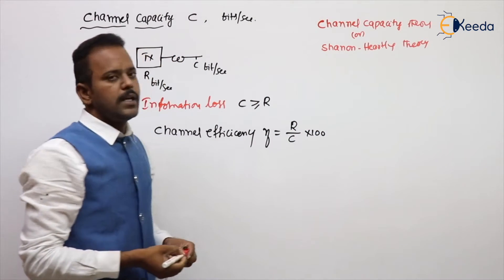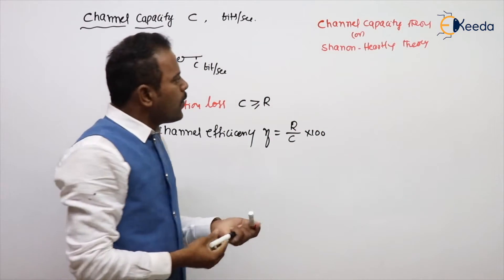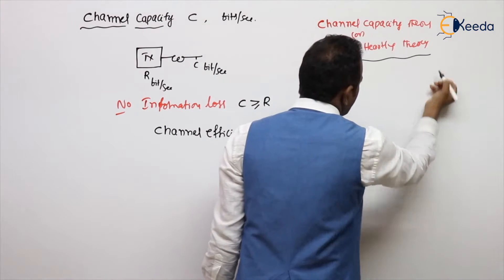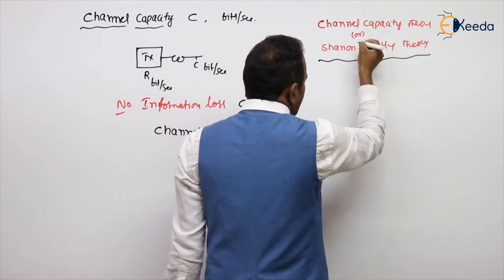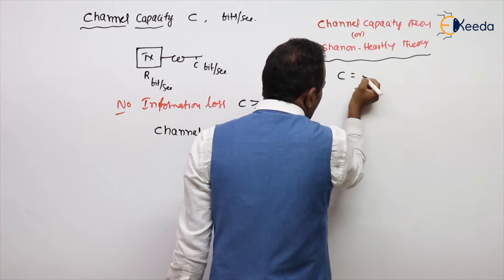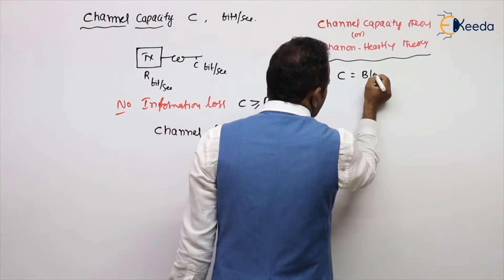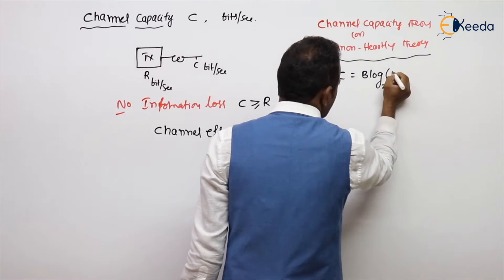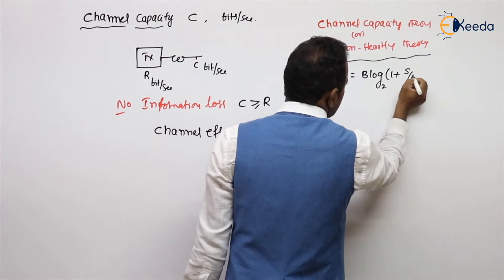What does the channel capacity theorem or Shannon Hartley theorem give you? It gives you C equals B log base 2 of 1 plus S by N.